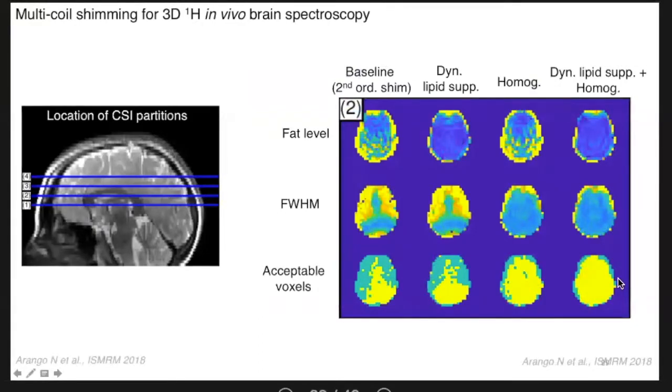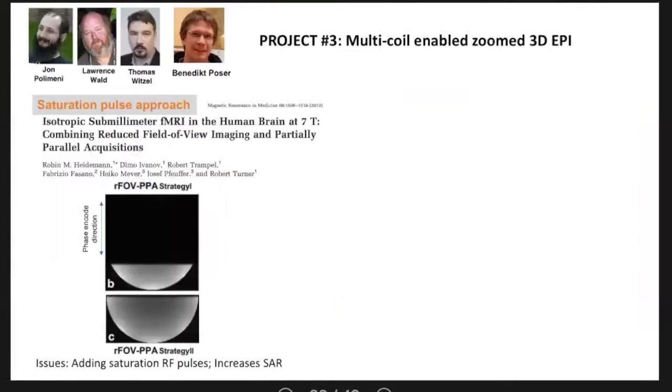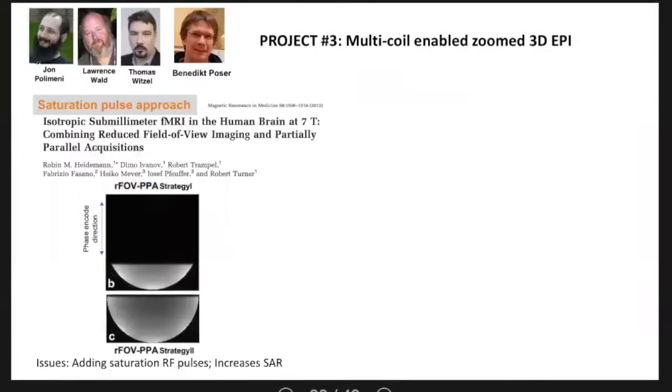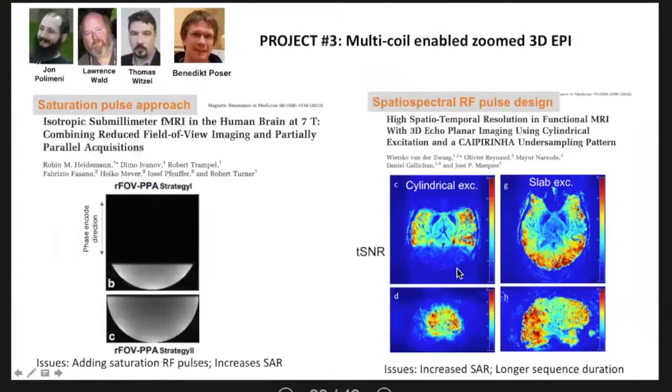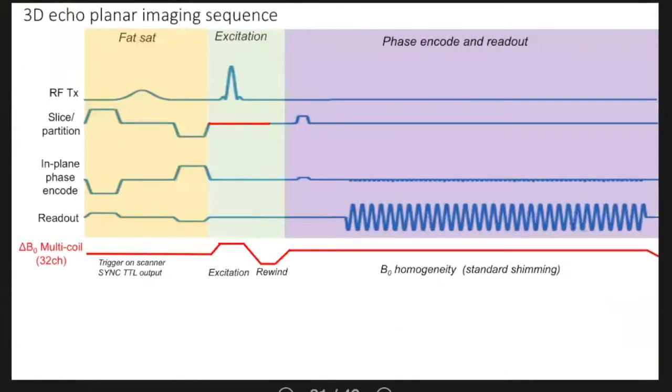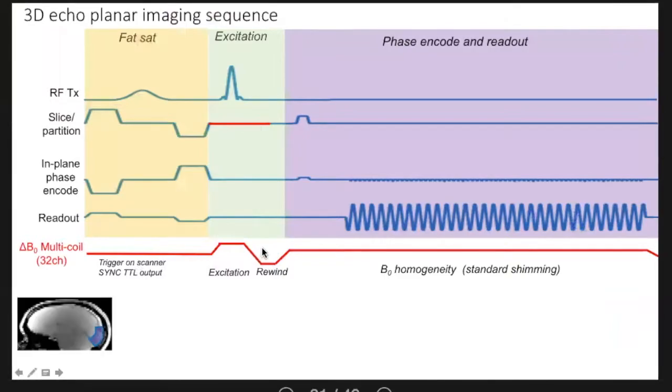And then, actually, I was talking with John Polamani at a conference in Minnesota, and we realized we can use the multi-coil for zoomed EPI. And the reason you might want to zoom is that when you only image part of the field of view, you have less spatial encoding burden. So you can potentially image at the same resolution faster or image with a higher resolution in equivalent time, because you need to encode fewer k-space points. So people have done this in the past with saturation pulses or spatial spectral RF pulses, but these both bring SAR penalties. They add to the length of the sequence. They're not perfect for every application, especially at 7T, where SAR is bad. So we modified a 3D echo planar imaging sequence. We turned off the conventional slab select gradient during the RF excitation pulse, and instead, we played out pulses on all 32 of our multi-coil AC-DC coils.